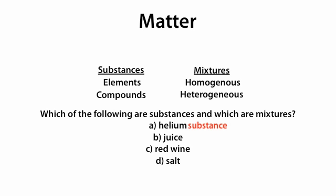Juice is composed of multiple things. For example, water, sugar, and orange flavoring. So we're going to call that a mixture. Red wine is also composed of multiple things. For example, water and alcohol. So that is also a mixture.